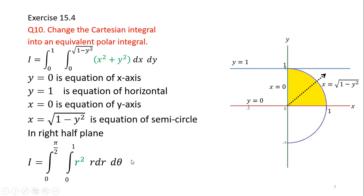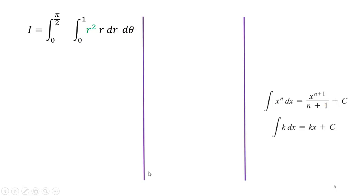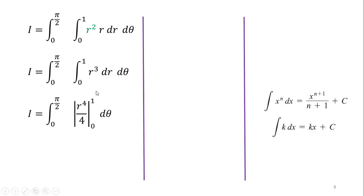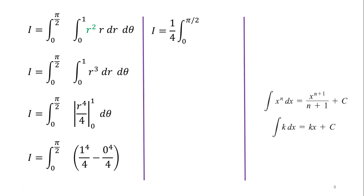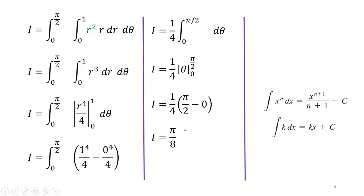After converting the Cartesian integral into an equivalent polar integral, we can evaluate it. We need two formulas: ∫xⁿ dx = xⁿ⁺¹/(n+1) + C, and ∫k dx = kx + C. To integrate, we first simplify: r² · r = r³. Applying the power rule, the integral of r³ is r⁴/4, evaluated for the given limits. Applying the fundamental theorem of calculus — upper limit minus lower limit — 1/4 is a constant we take outside, and we are left with the integral from 0 to π/2 of dθ, which integrates to θ. Applying the limits and simplifying, our final answer is π/8.